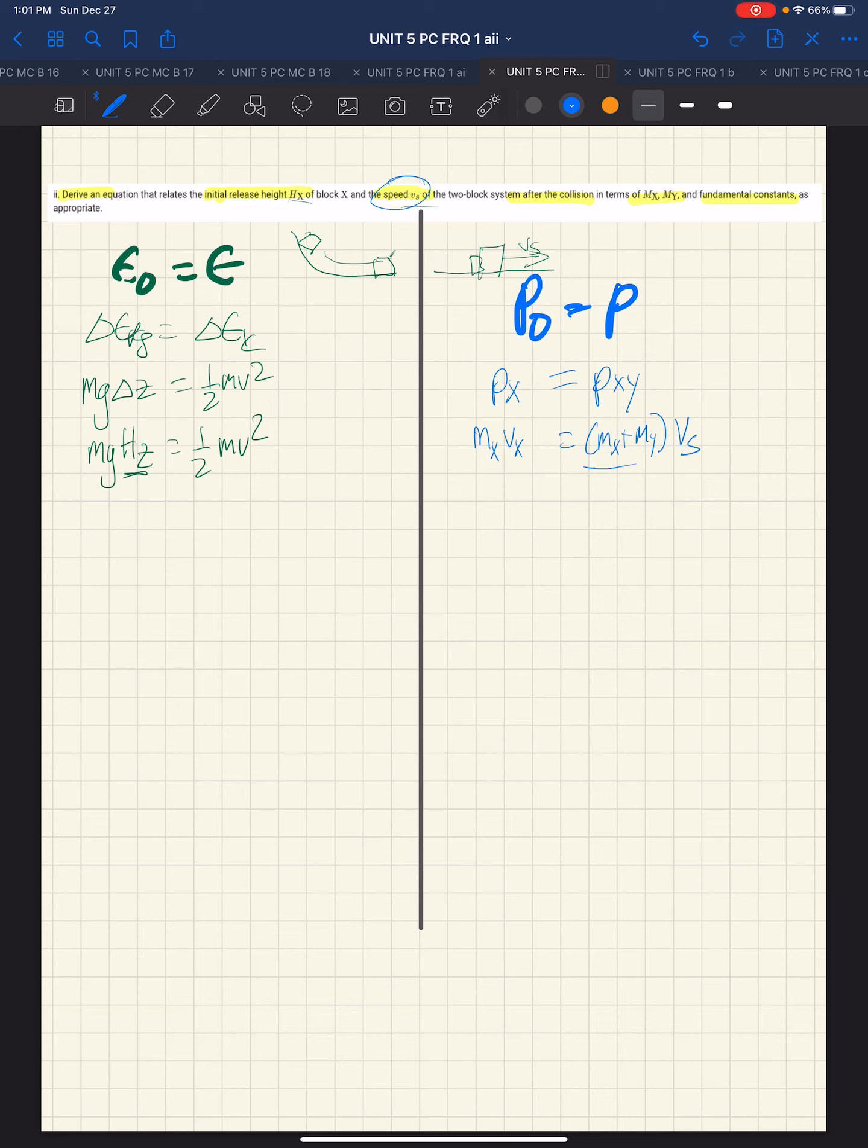So, to find what vs is, we divide both sides by mx plus my, and we get vs is mx vx over mx plus my.